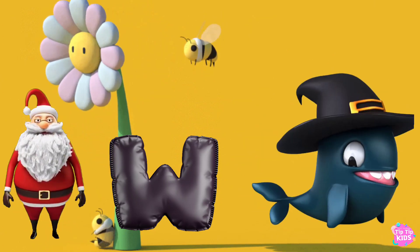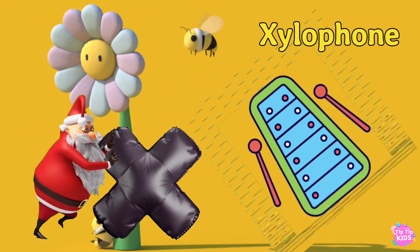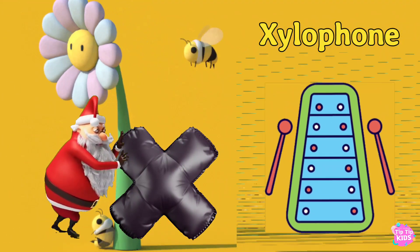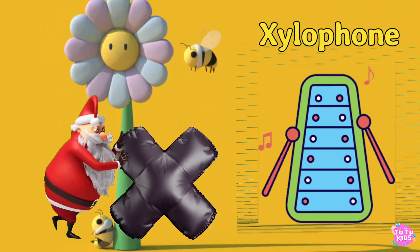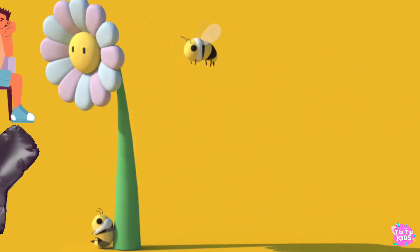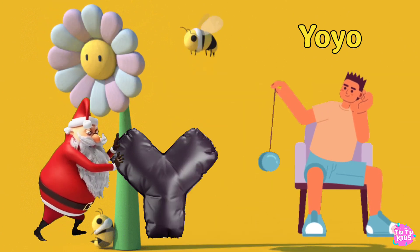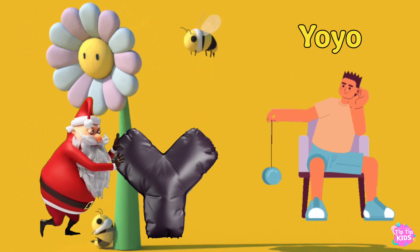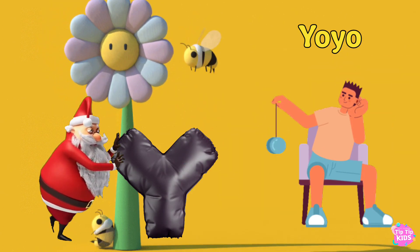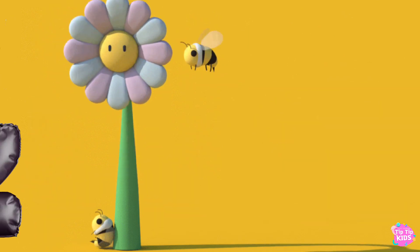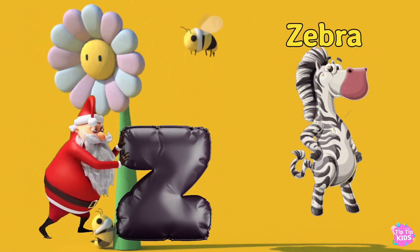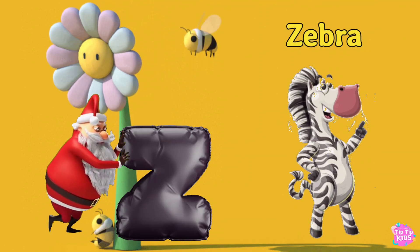W is for veil. X is for xylophone. Y is for yo-yo. Z is for zebra.